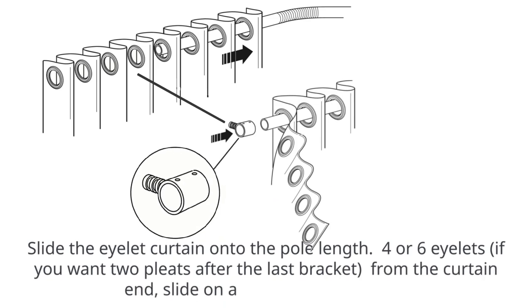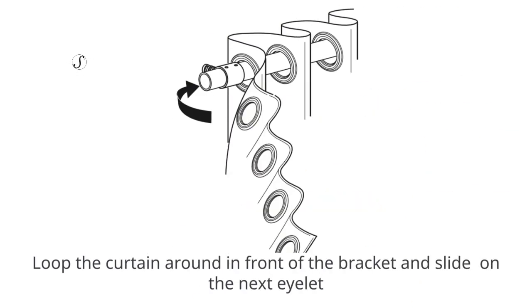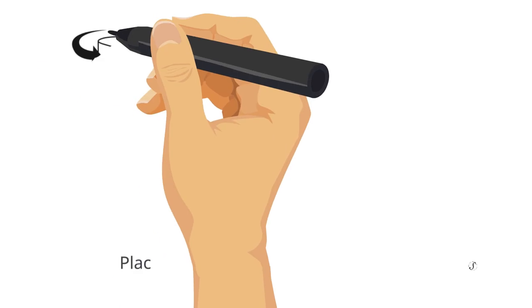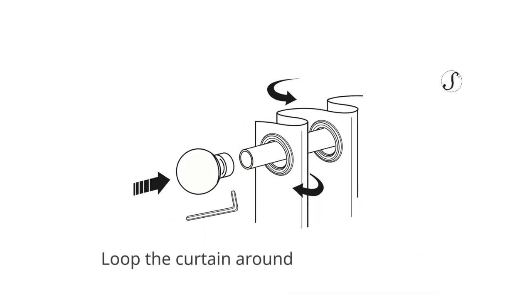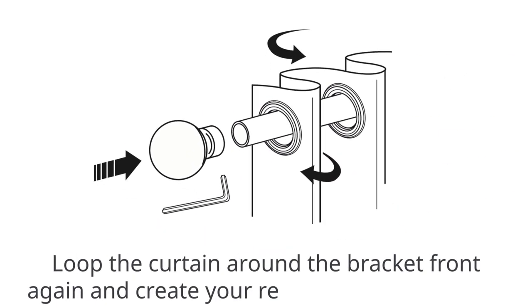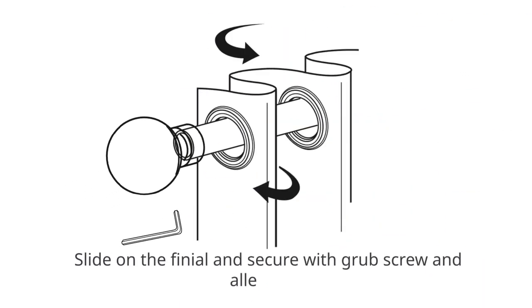From the curtain end, slide on a bracket front section. Loop the curtain around in front of the bracket and slide onto the next eyelet. Place a second eyelet on the pole and slide to another bracket front section. Loop the curtain around the bracket front again and create your remaining eyelet pleats. Slide on the finial and secure with grub screw and allen key.